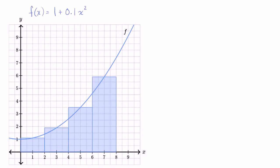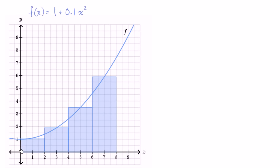What I want to do in this video is get a little bit of practice trying to approximate the area under curves, and also get a little bit more familiarity with sigma notation in this context. So what we have here is the graph of f of x is equal to 1 plus 0.1x squared, and we have rectangles trying to approximate the area under the function f between x equals 0 and x equals 8.